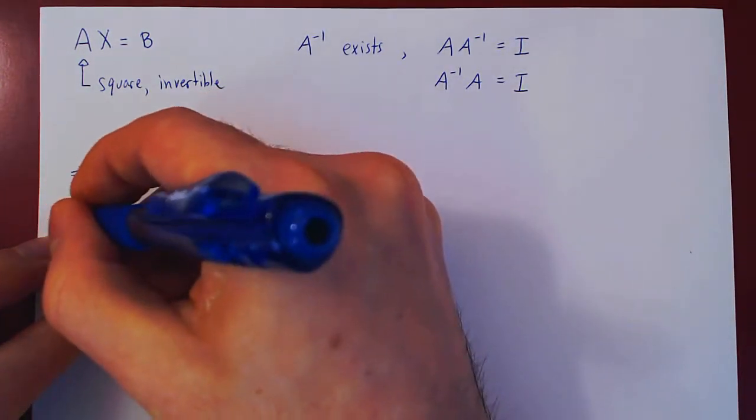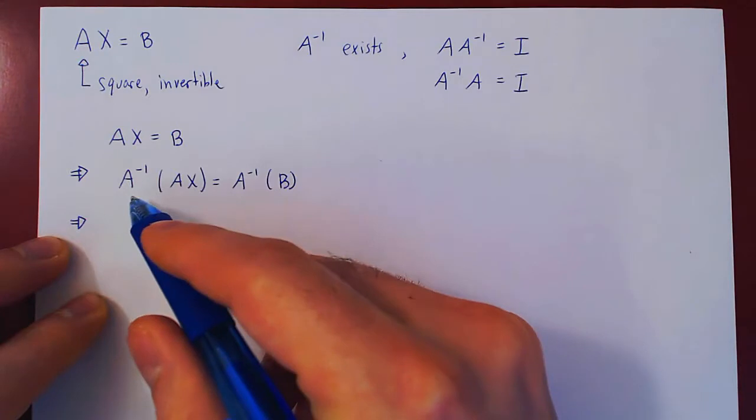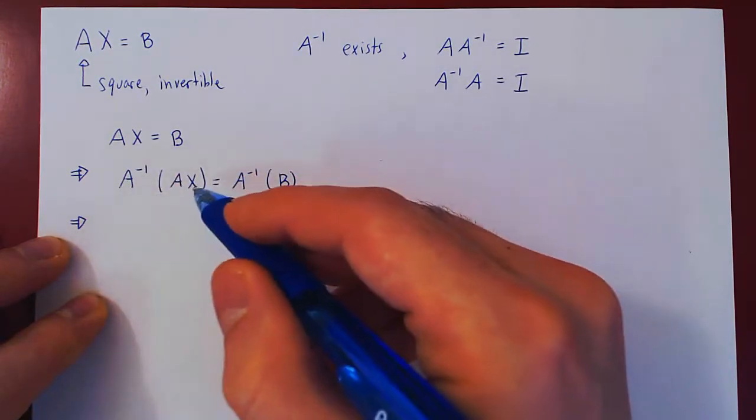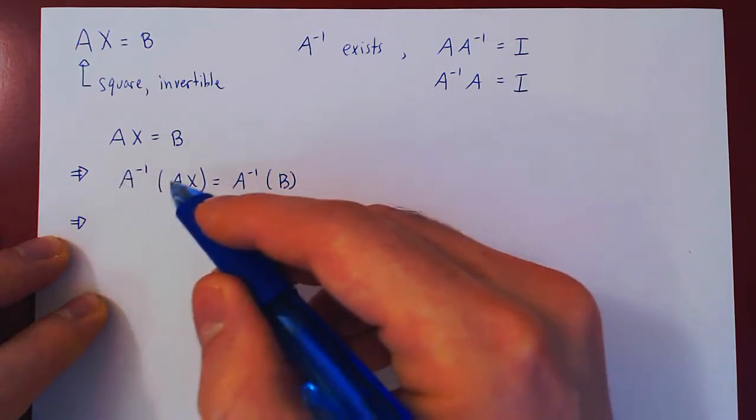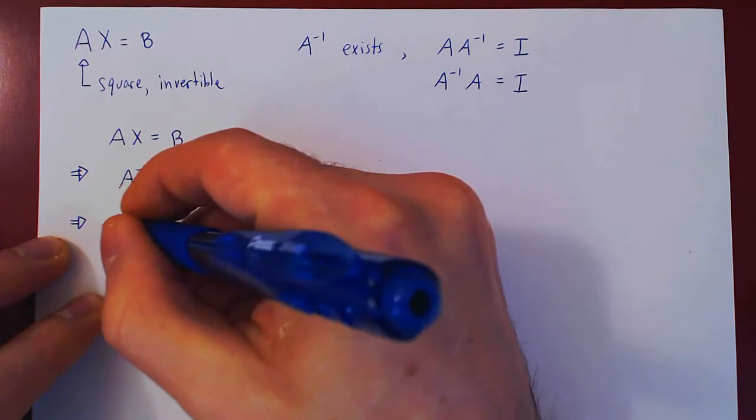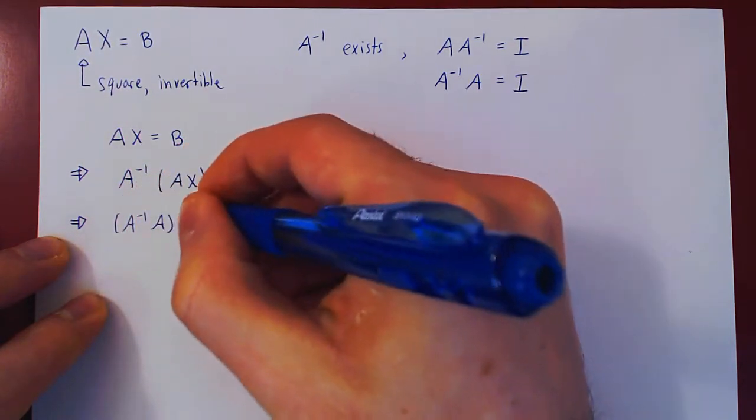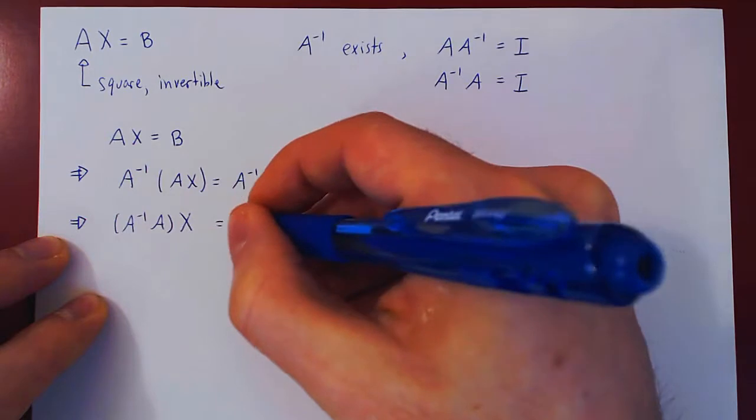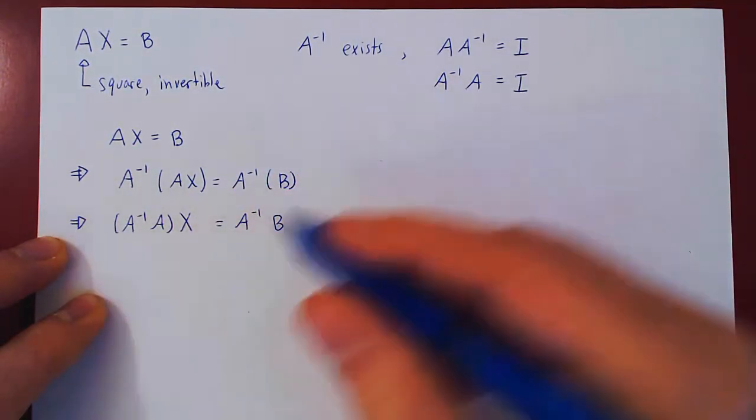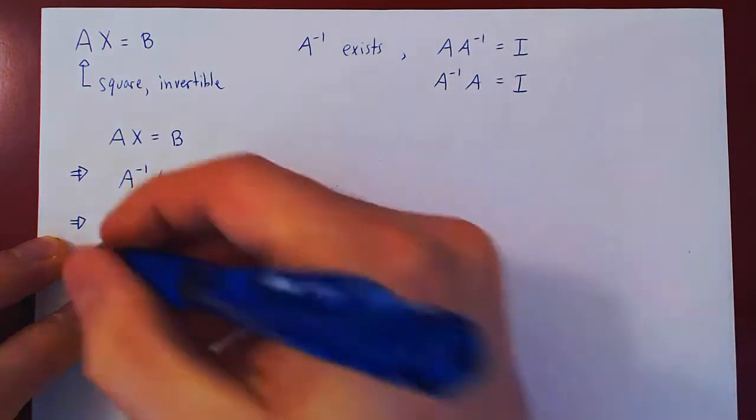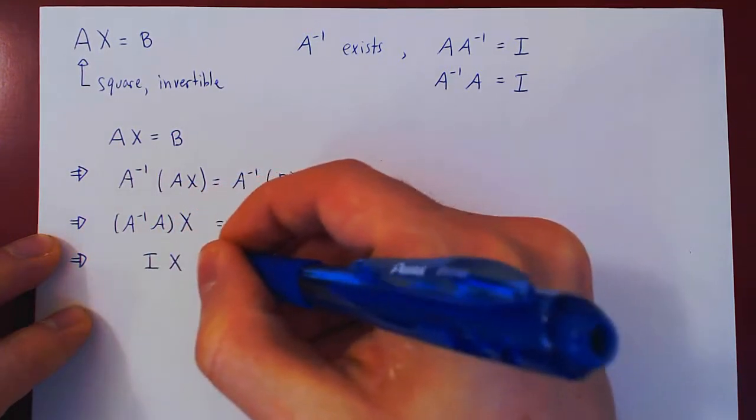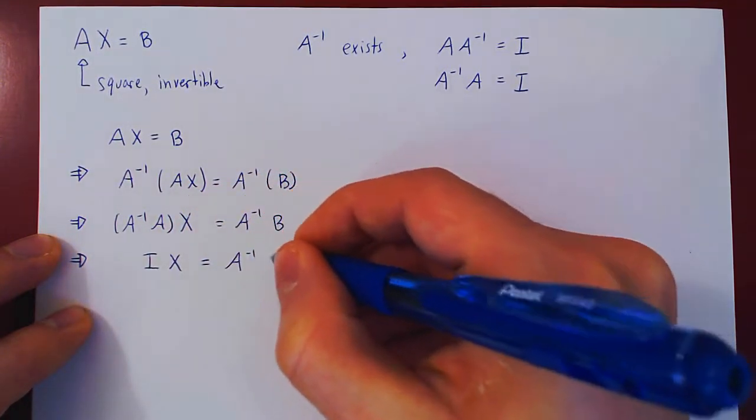Well, now multiplication is associative, right? So we're doing A times X first, then times A inverse, but we can do first A inverse times A, and then multiply X on the left by associativity of multiplication. But A inverse times A, this is simply I, so we get I times X equals A inverse B.